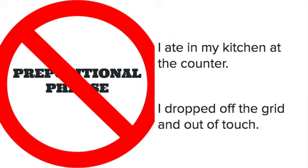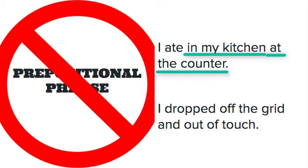You're also never going to find a direct object inside of a prepositional phrase. 'I ate in my kitchen at the counter.' Ate is our action verb, but there's nothing that we ate in the sentence. Instead, it's telling us with two prepositional phrases where we ate. 'In my kitchen' is the first prepositional phrase, and 'at the counter' is the second prepositional phrase. So there's no direct object here.